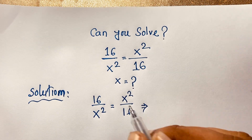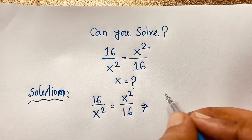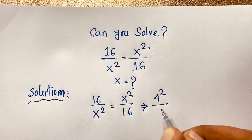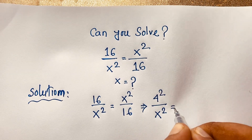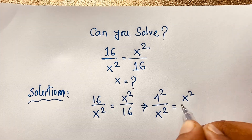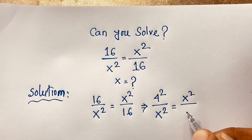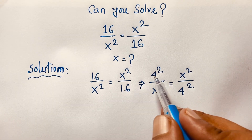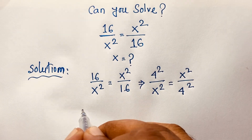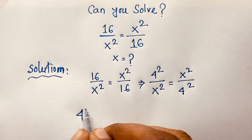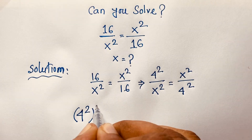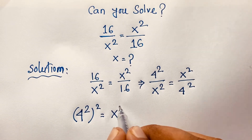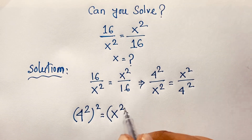We can rewrite 16 as 4 to the power 2, so we have 4 squared over x squared is equal to x squared over 4 squared. If we multiply the denominators on both sides, it will be 4 squared to the power 2, equal to x squared times x squared, which is x squared whole to the power 2.